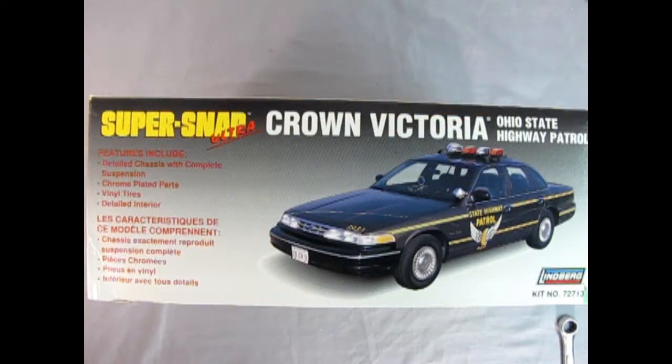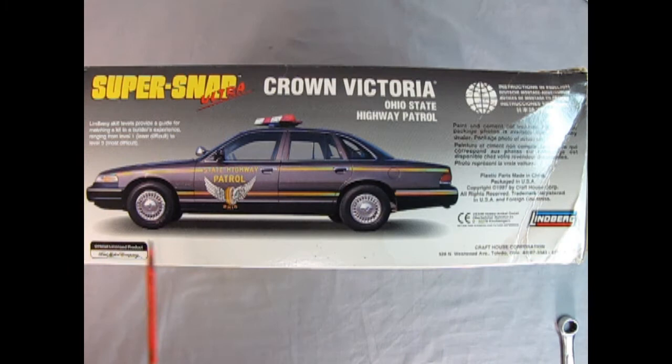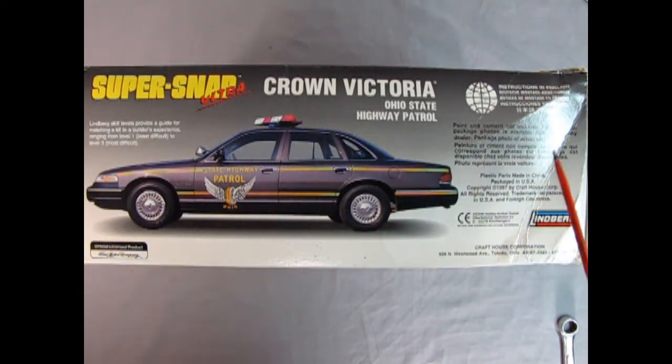On this side of the box we get another wonderful three-quarter shot of the actual Ford police car and it says you get a detailed chassis with complete suspension, chrome-plated parts, vinyl tires, and a detailed interior. On this side of the box we get a wonderful side view of the real State Highway Patrol car from Ohio and you can see just how much they duplicated this model in the model kit box.